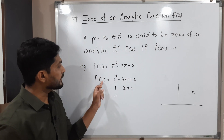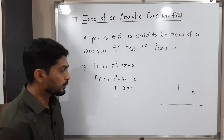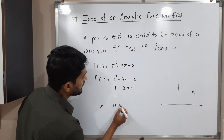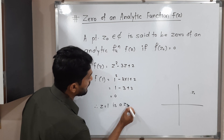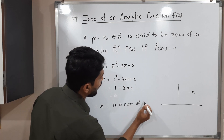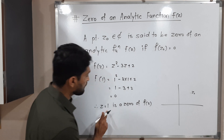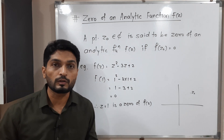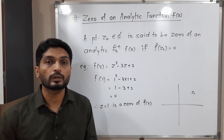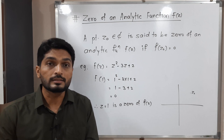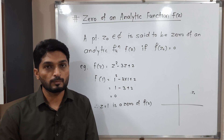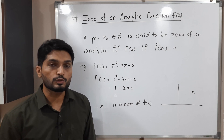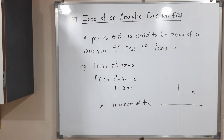If you solve it, you will get the value 0. By putting z equal to 1, we are getting value 0. Therefore, z equal to 1 is a zero of f of z. That point is not 0 here, but it gives the value of the function as 0. That is why we call it a zero of analytic function f of z.